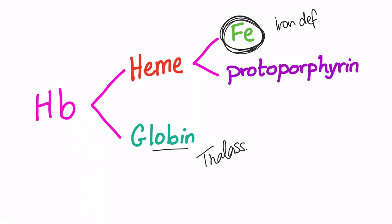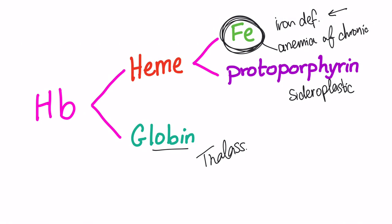Thalassemia affects the globin portion of hemoglobin. Anemia of chronic disease is another cause — the key difference is: in iron deficiency anemia, you are deficient in iron; in anemia of chronic disease, you have iron but you cannot use it. We will discuss all of these further in the next video, so please subscribe and stay tuned.